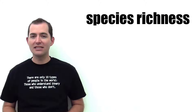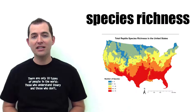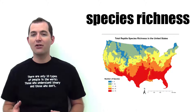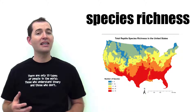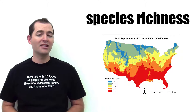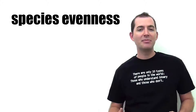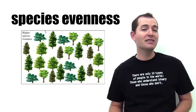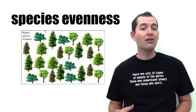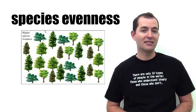Species richness is the number of groups of genetically related individuals in a site or area — this is simply a count of the number of species that are present. Species evenness is the proportion of species present in an area, or how close in numbers each species is in an area.